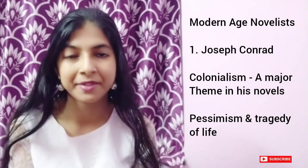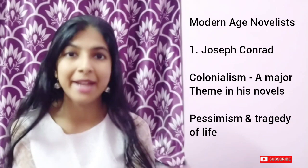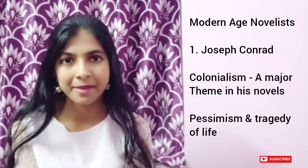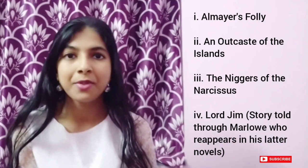First, we have Joseph Conrad. Colonialism was an important theme in his novels. Joseph Conrad had a deep sense of the tragedy of life. As we discussed in an earlier video, pessimism was a dominant theme in modern age writings, and in Joseph Conrad's novels, the main characters often die. The first two novels of Joseph Conrad were based on his own experiences in Malaya: Almayer's Folly and An Outcast of the Islands.